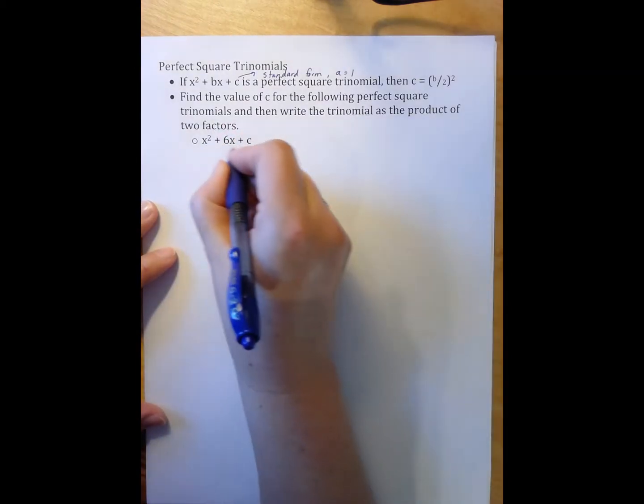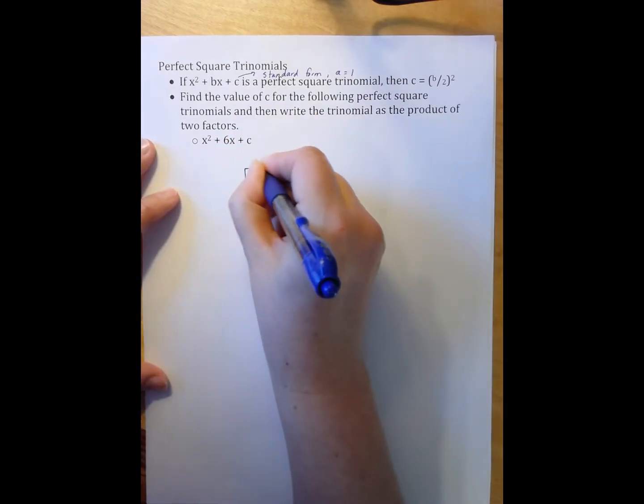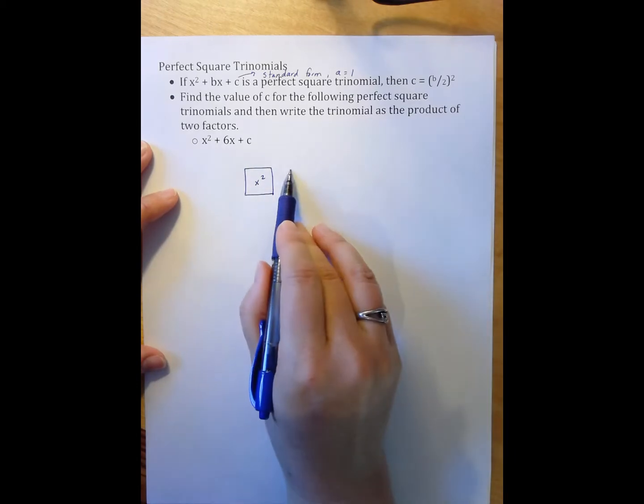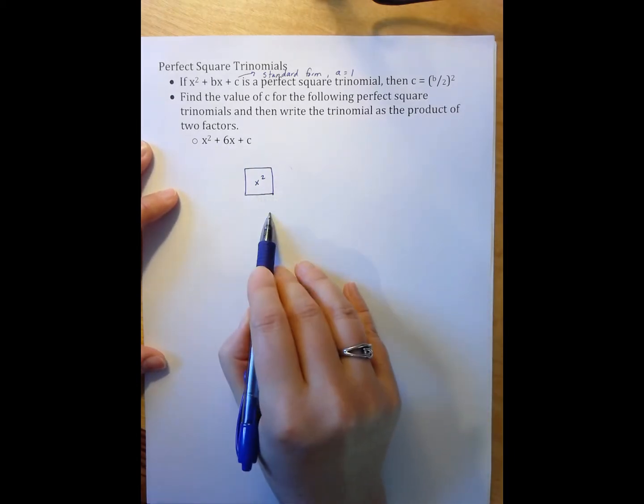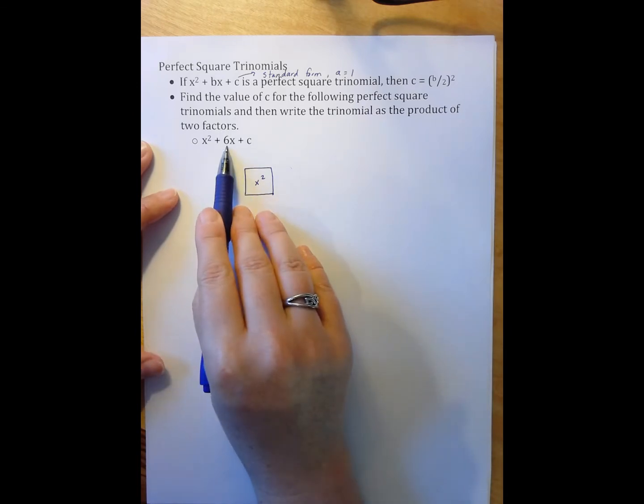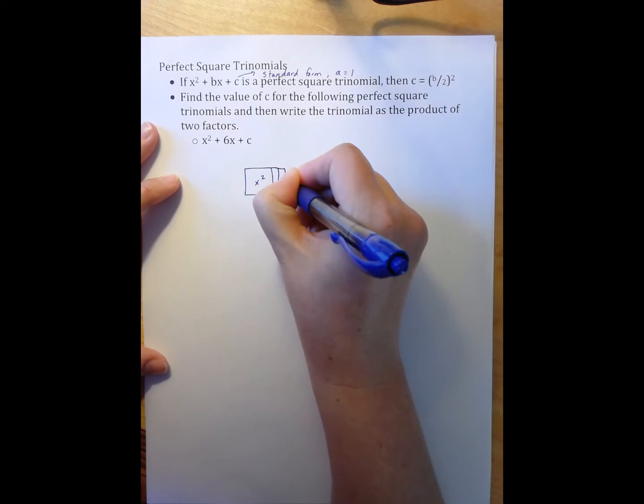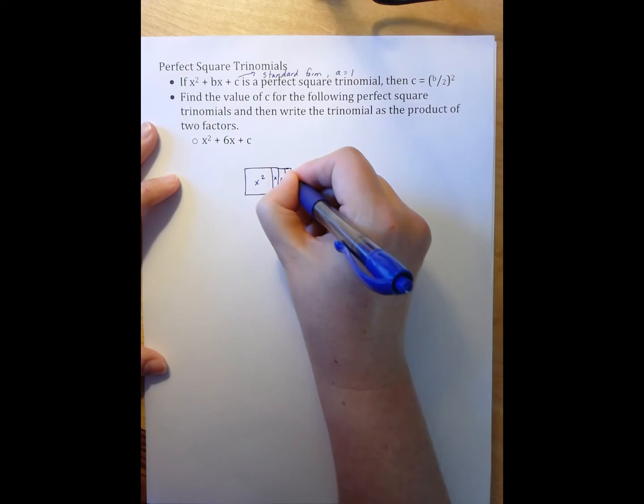This first piece of information that I'm given is that I have an x squared tile and I have 6x tiles. In order to make a square, I need to have the same number on this dimension as this dimension. So I'm going to have to split my 6x's into 3x's. So there's 1, 2, 3, x, x, x.